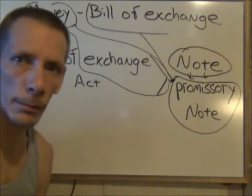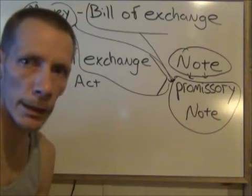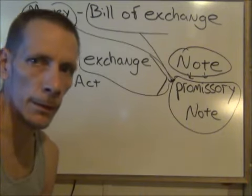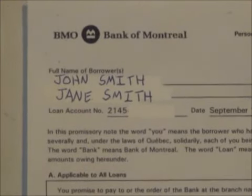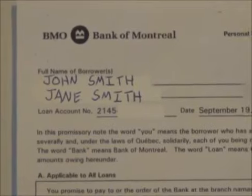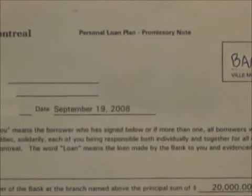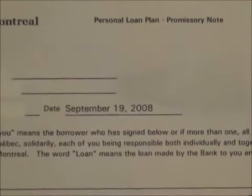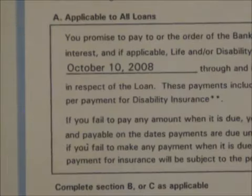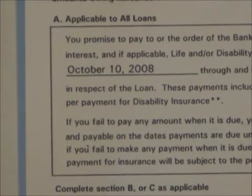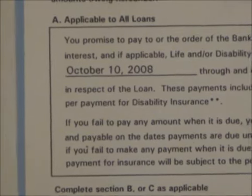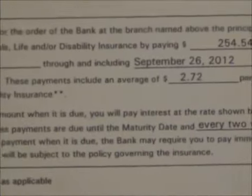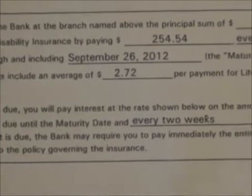Now, you think that you are borrowing money from the bank, but you are not. You are creating money. You are creating an asset for the bank. This is a loan documentation that I got from the bank when I applied for what I thought was a loan from the bank in 2008. You zoom in — it's from the Bank of Montreal. It says full name of borrower, it's dated, and look at the top where it says 'personal loan and promissory note.' You promise to pay to the order of the bank the principal sum of $20,000.